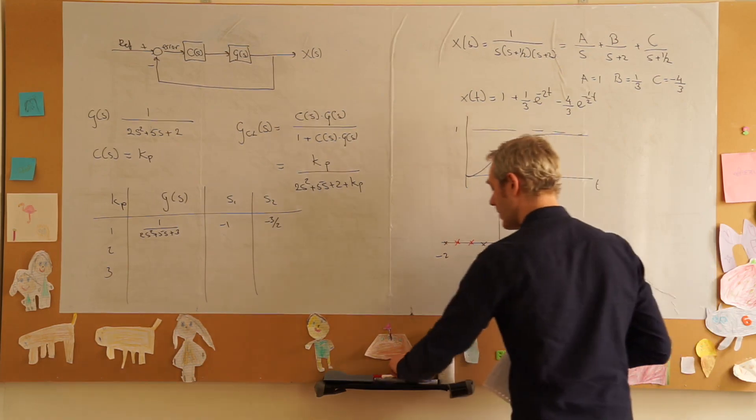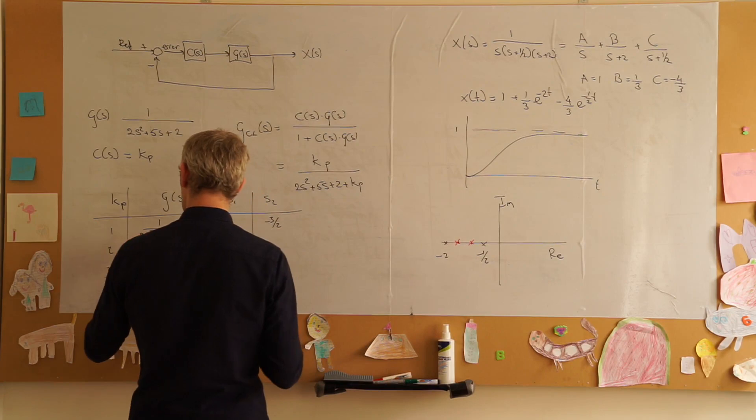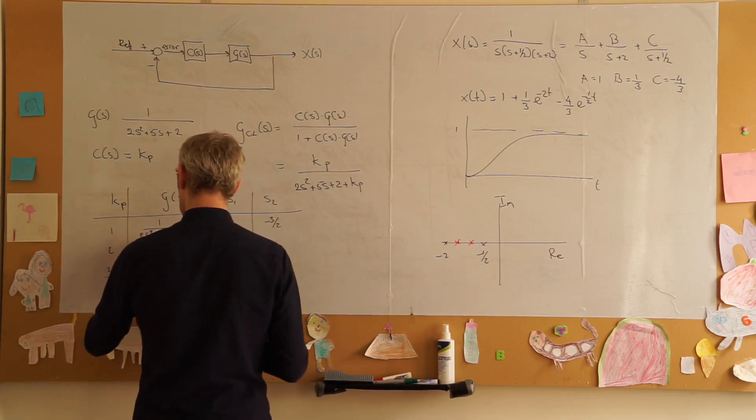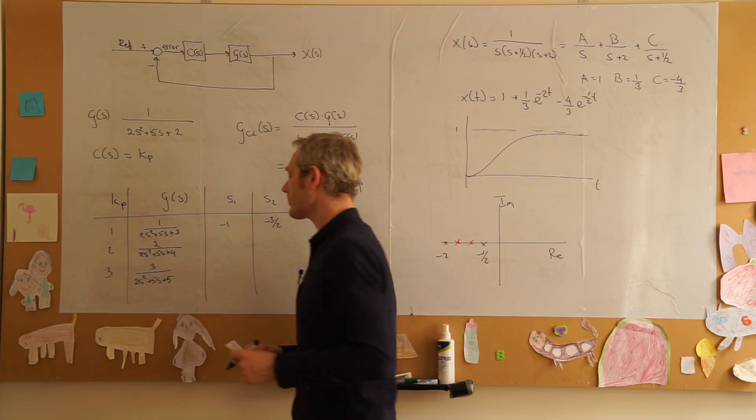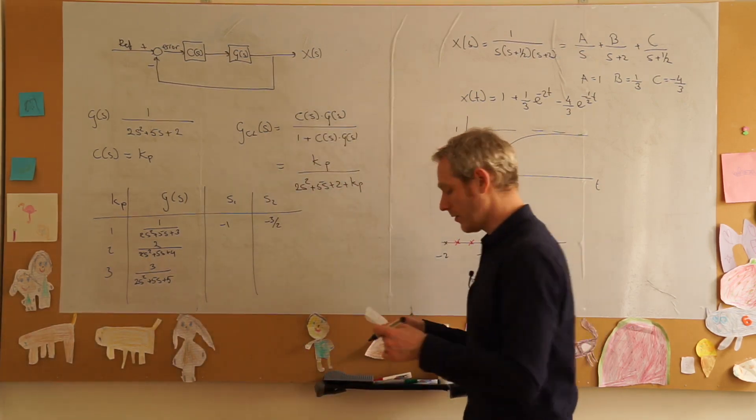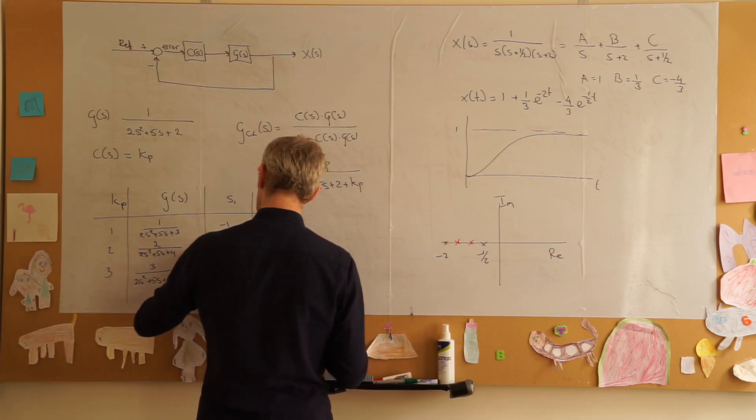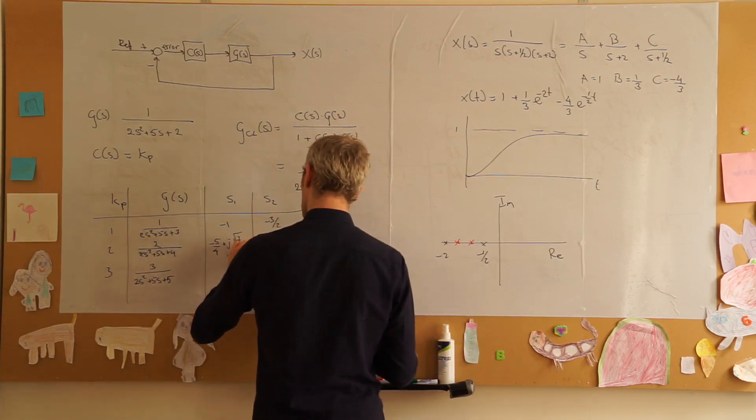If we take k is two we'll get one over two s squared plus five s plus four. The last step is three over two s squared plus five s plus five. If we look at the locations of the poles they will be minus five over four plus j times square root of seven over four and of course then this will be its complex conjugate.